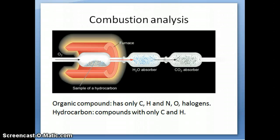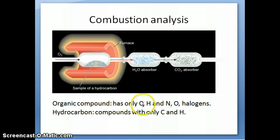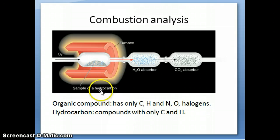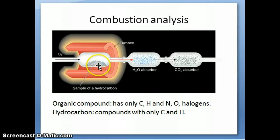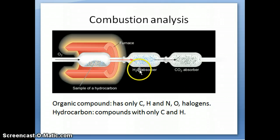If you remember from one of the earlier videos, I mentioned how we do combustion analysis. This is usually applied to an organic compound, which is basically a compound that only has carbon and hydrogen in it and some smaller number of nitrogen, oxygen, or halogen atoms. You take the organic compound and put it in a furnace. You let oxygen gas go into the furnace, which allows the combustion reaction to occur, and the products are water and carbon dioxide.